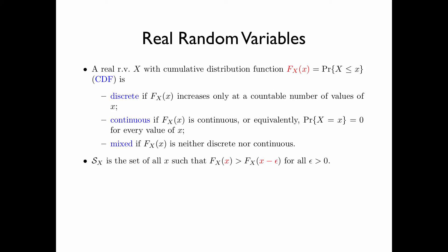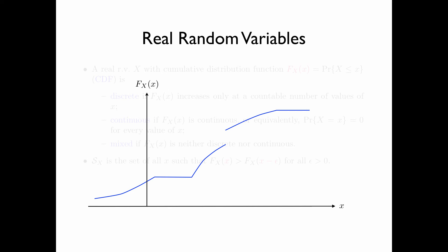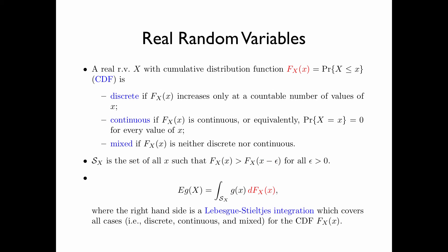The support of the random variable x is the set of all x such that F(x) is strictly greater than F(x minus epsilon) for all epsilon greater than 0. Here is the CDF of the mixed distribution we have seen before, and this is the support of x, which is precisely the complement of the set of all x such that F(x) stays constant. The expected value of a function g of a random variable x is equal to integrating g(x) with respect to dF(x) over the support S of x, where the right-hand side is a Lebesgue-Stieltjes integration, which covers all cases: discrete, continuous, and mixed.